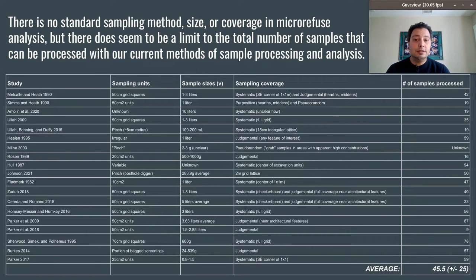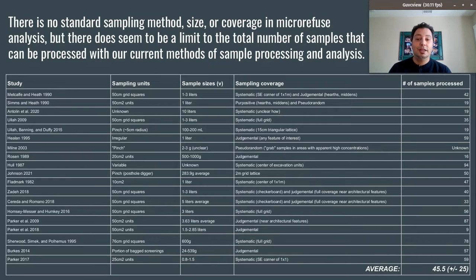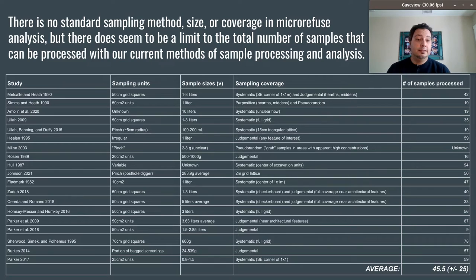When you look through this table you basically find that there's no standard at all in terms of the methods that we employ to recover micro refuse. The only thing that seems to be holding true is that there's an upper limit to the number of samples that can logistically be analyzed. We have a range from nine to a hundred, but the average is close to about 50, plus or minus 25.